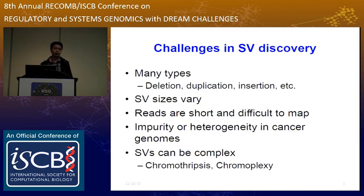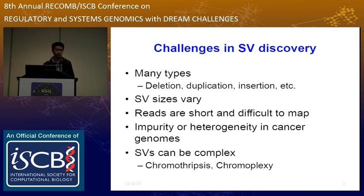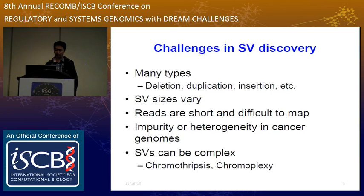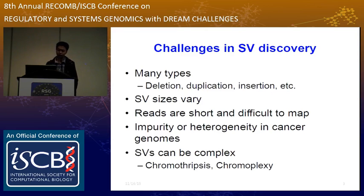There are many challenges in structural variation detection using next-generation sequencing technology. There are many types of structural variations, including deletion, duplication, insertions, etc. Each type of structural variation has its own matching signatures. The sizes of a structural variation vary from tens of base pairs to millions of base pairs. And next-generation sequencing reads are extremely short and very difficult to map to the reference genome, especially when they span structural variation breakpoints. In cancer genomes, impurity or heterogeneity increases the difficulty of structural variation detection, and structural variations can be extremely complex.